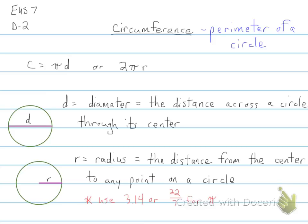The formula for finding circumference is pi times diameter or 2 times pi times the radius, depending on what you're given. Now diameter, as a definition, is the distance across a circle through its center. You need to make sure it goes through the center.